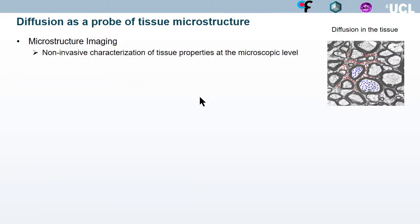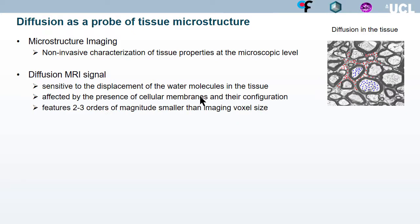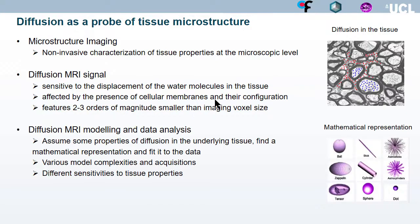The aim of microstructure imaging is to provide a non-invasive characterization of tissue properties at the microscopic level. Diffusion MRI is a modality of choice for this, because the signal is sensitive to the displacement of water molecules in the tissue, which is affected by the presence of cellular membranes and their configuration. This reflects features on orders of magnitude smaller than the actual image voxel size. If we want to extract information regarding the tissue, we need to assume some properties of the diffusion in the underlying tissue, then find an appropriate mathematical representation and fit it to the data.